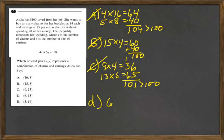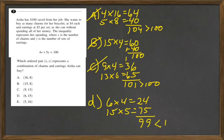Let's try D. We have 6 times 4 equals 24, and we have 15 times 5, which equals 75, and we get 99, which is less than 100, so D is our winner.